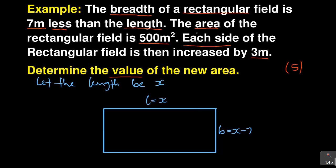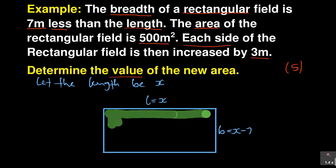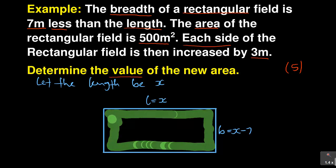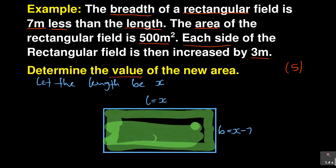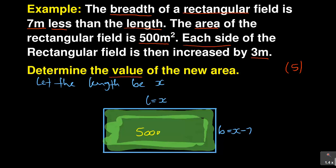And then they are saying the area of the rectangular field — by area they mean the shape inside. So this is the area of this rectangular field. They are saying the area is 500 square meters.